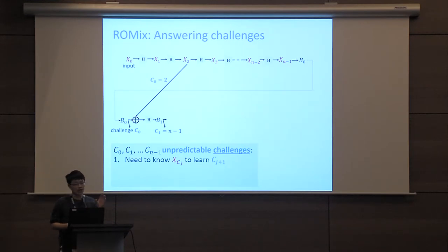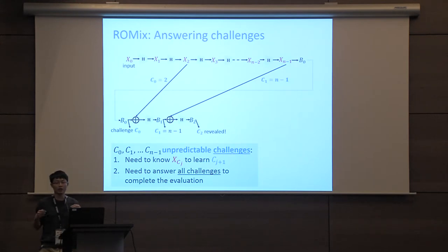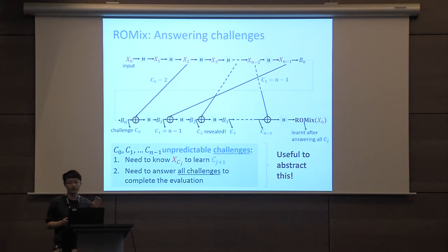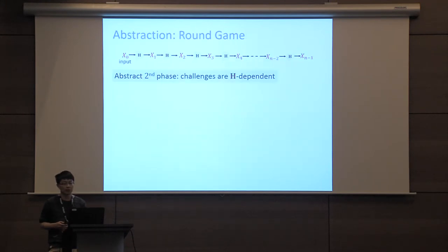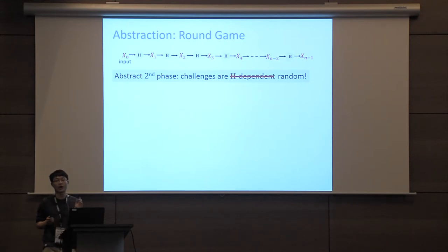To answer each challenge Cj we need to recover the value x_{Cj}, which in turn allows us to learn the next challenge C_{j+1}. We need to answer all challenges to complete the evaluation. This process of answering challenges is exactly what makes RawMix memory hard. We consider a simplified setting where the challenges in the second phase are truly random and independent, resulting in a game called the round game that captures the essence of why RawMix is memory hard.